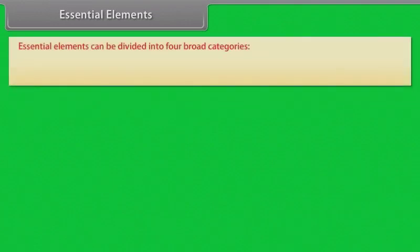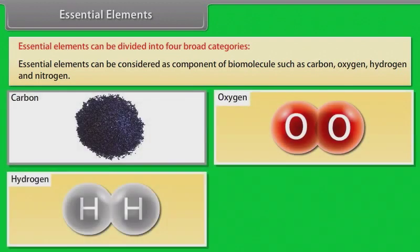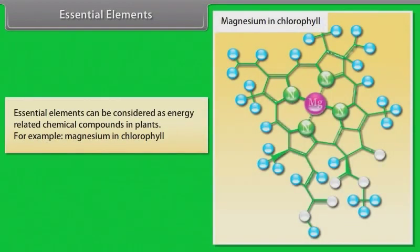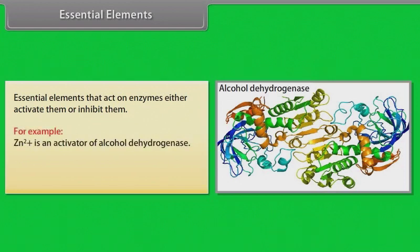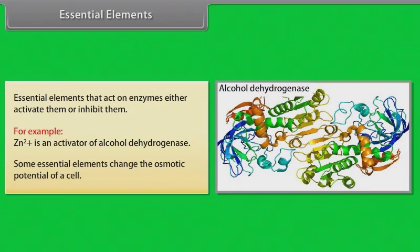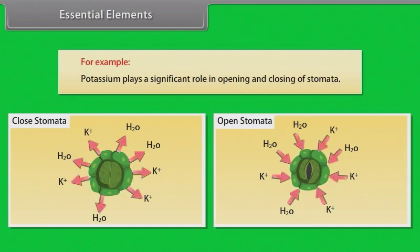Essential elements can be divided into four broad categories. Essential elements can be considered as components of biomolecules such as carbon, oxygen, hydrogen and nitrogen. Essential elements can be considered as energy-related chemical compounds in plants, for example magnesium in chlorophyll. Essential elements that act on enzymes either activate them or inhibit them, for example Zn²⁺ is an activator of alcohol dehydrogenase. Some essential elements change the osmotic potential of a cell, for example potassium plays a significant role in opening and closing of stomata.